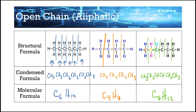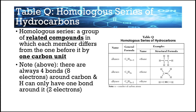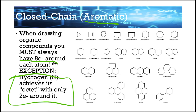Those were open chains — kind of a straight line. Then we have closed chains, which form circular-type compounds called aromatic compounds — that just means they form some kind of closed structure. A reminder: every element needs eight electrons around it — the octet rule. However, hydrogen is an exception: it achieves its full configuration with only two electrons around it.